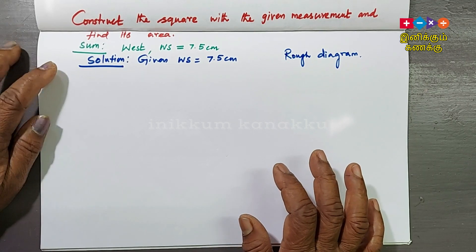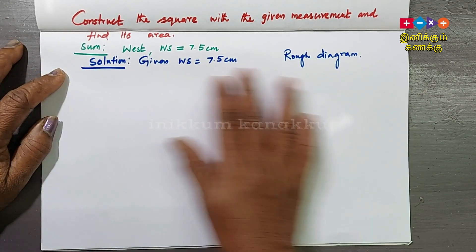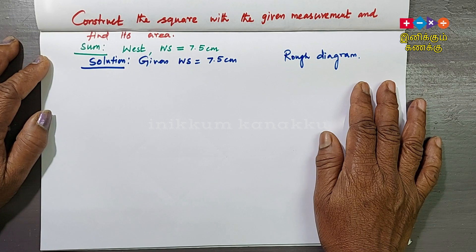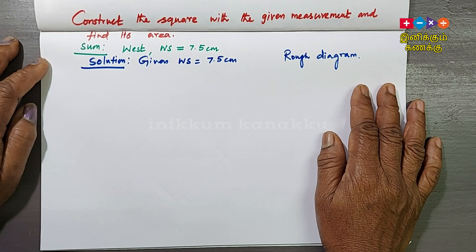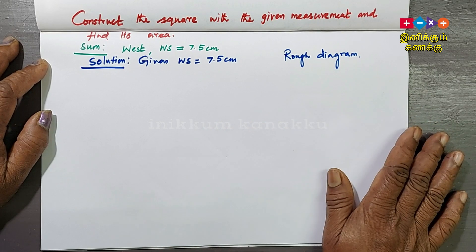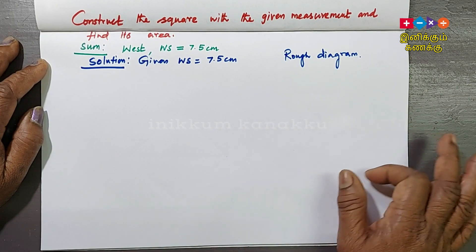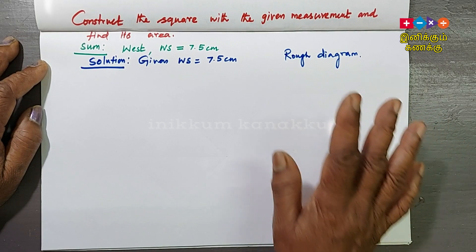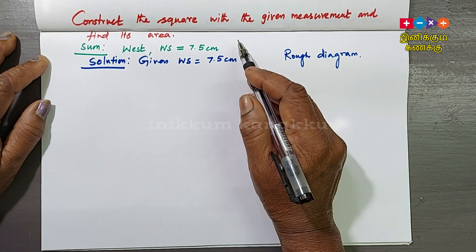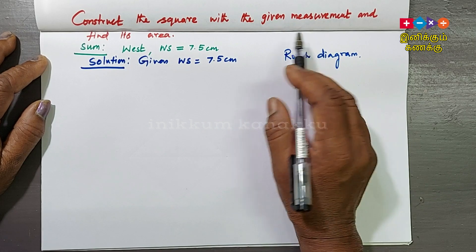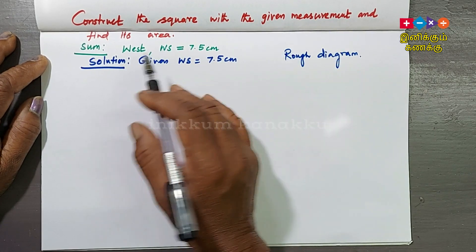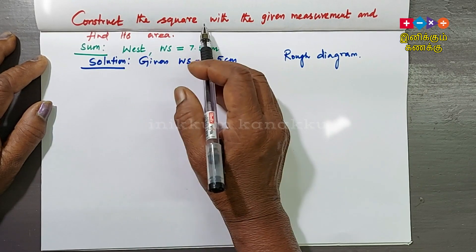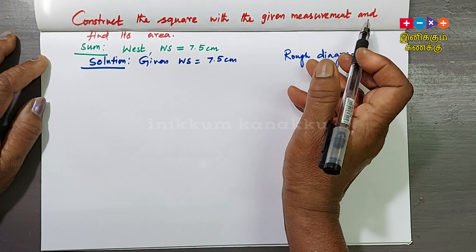Welcome. In this video we will see how to find measurements of a square. Since all 4 sides are equal, one measurement is enough. We will see each measurement using a square.